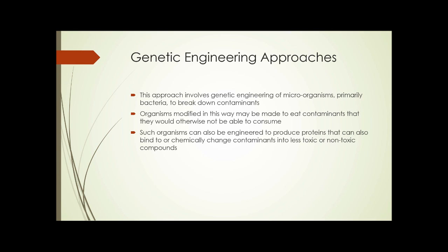There are also genetic engineering approaches, involving genetic engineering of microorganisms — primarily bacteria — to break down contaminants. Organisms modified in this way may be made to consume contaminants they would not otherwise be able to process. You can take bacteria that normally exist in the soil and splice in genes that allow them to attack and consume the contaminants and break them down. They can also be engineered to produce proteins that bind to or chemically change contaminants, so there are two types of approaches with genetic engineering for remediation.